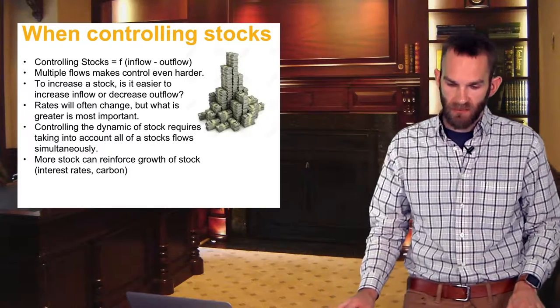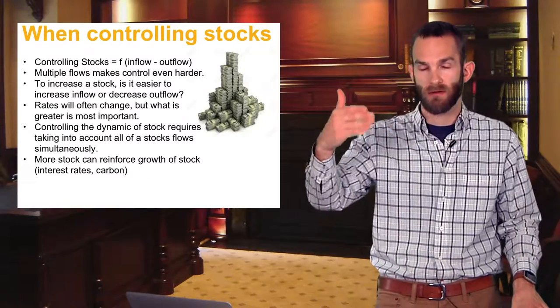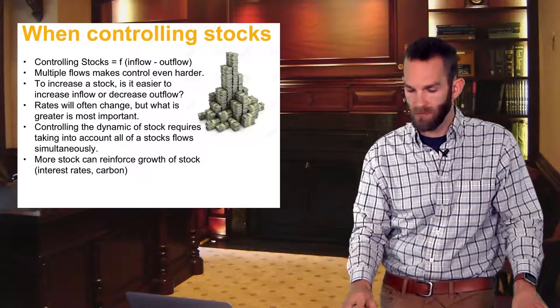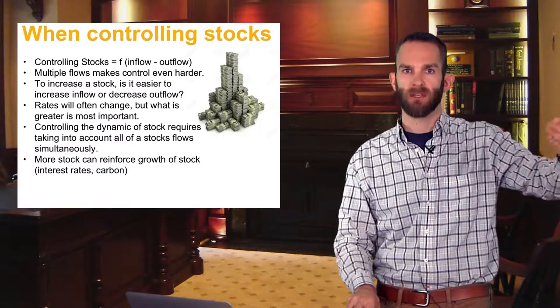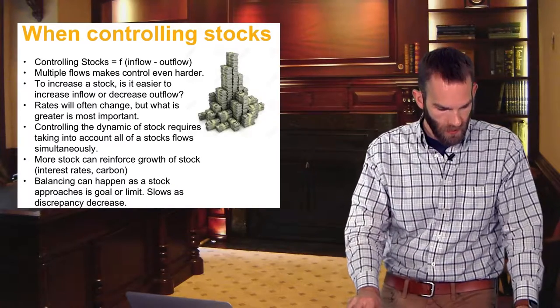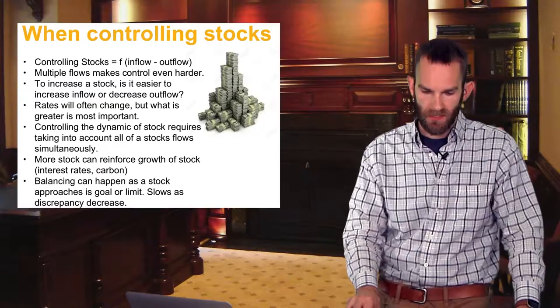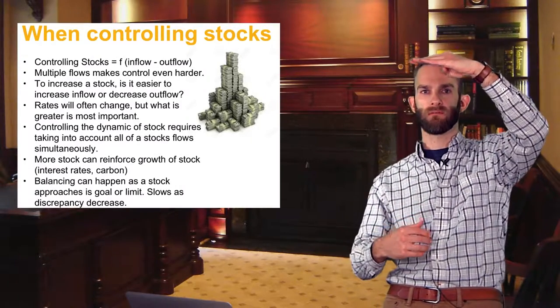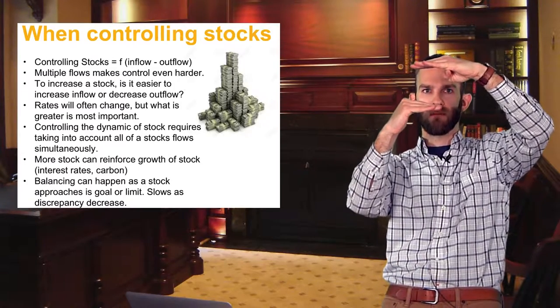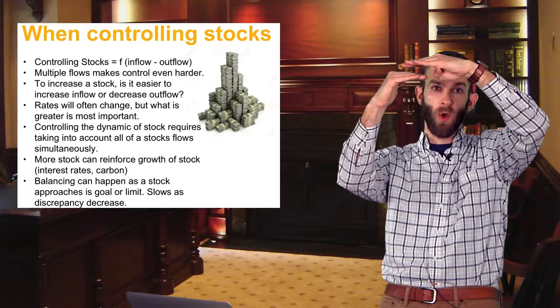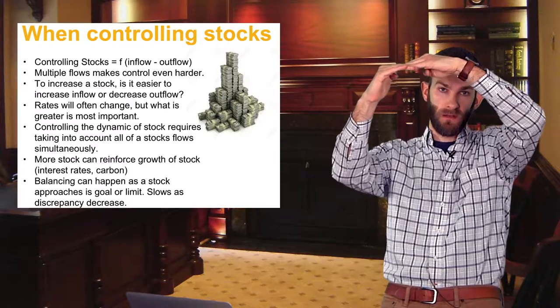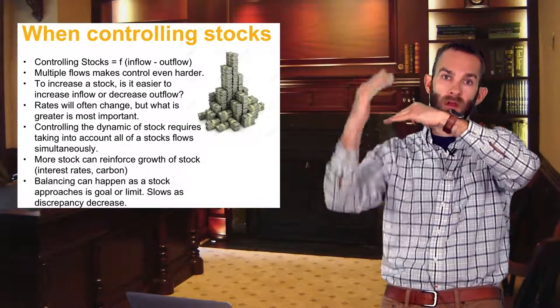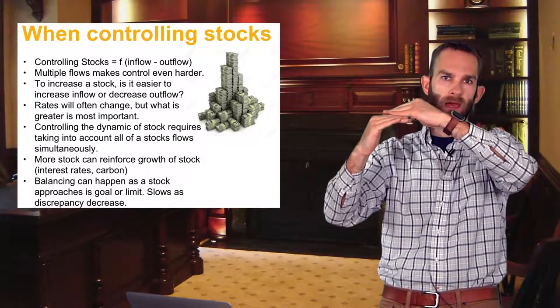More stock can reinforce stock of growth. Interest rates are a great example of this. If you have a higher interest rate and the more money you put into something that has interest rate, it'll generate more. Stock encourages more stock. But also carbon does the exact same thing in temperature. More carbon in atmosphere increases that temperature more so. And my last one is that balancing can happen as a stock approaches its goal or limit. Slows down as there's a discrepancy decrease. So if the brim of your tub is here or the brim of your reservoir is here and your stock is here, it might want to meet that. But then as it starts to approach, it'll slow down. So most systems, naturally speaking, once they hit capacity, they stop.